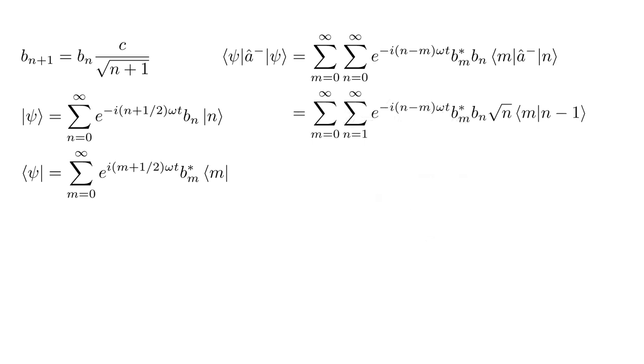Back to our expectation value. The destruction operator destroys the n equals zero ket and converts the general n ket into square root n times the n minus one ket. Replacing n with n plus one, we get an expression that contains as a factor the projection of the n-photon state onto the m-photon state. This is zero unless m equals n, in which case it's one.